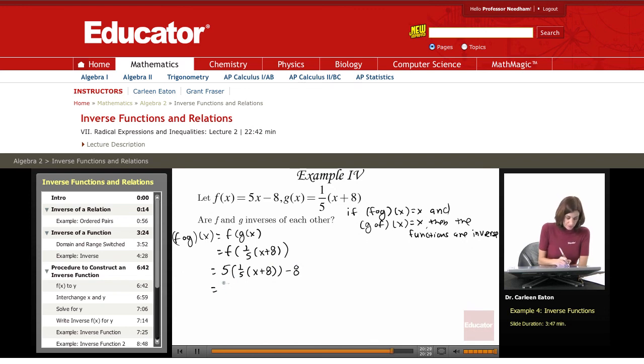This is 5 times (1/5)x + 8 - 8. These 5s cancel, and I'm just left with x + 8 - 8, which equals x. So we have our first part: f composed with g of x is x.